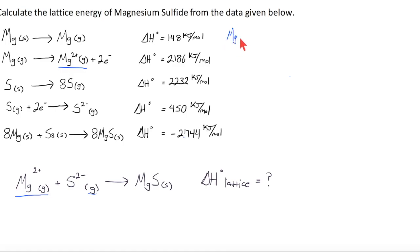We're going to have Mg²⁺ gas plus 2e⁻ becomes Mg gas. And of course, the important thing about this problem is that if the ΔH for this process was positive 2186 when it was going this way, the ΔH for the same process but in reverse will be negative 2186.